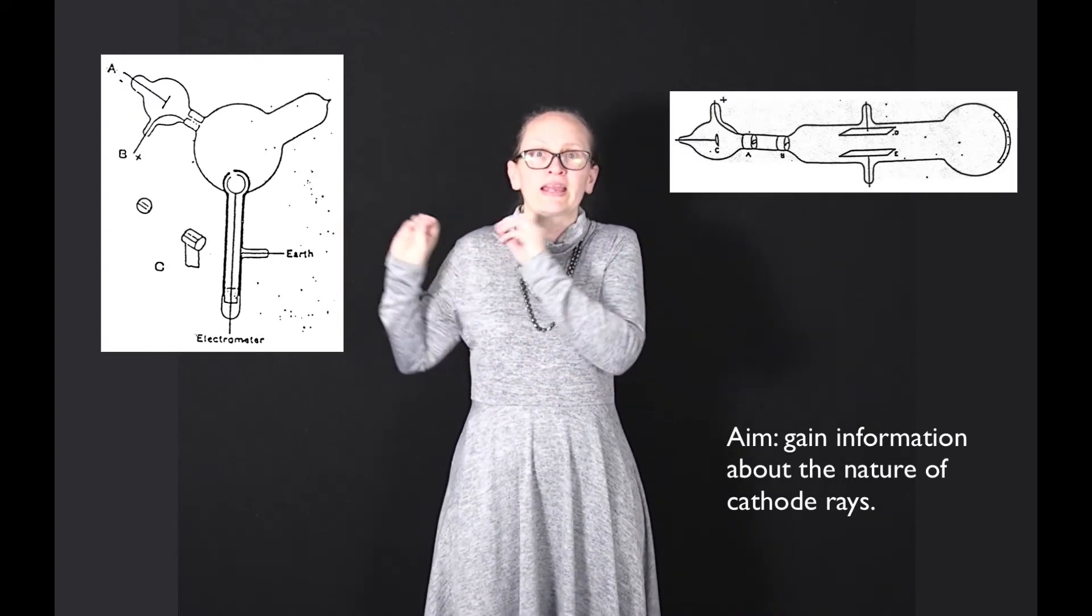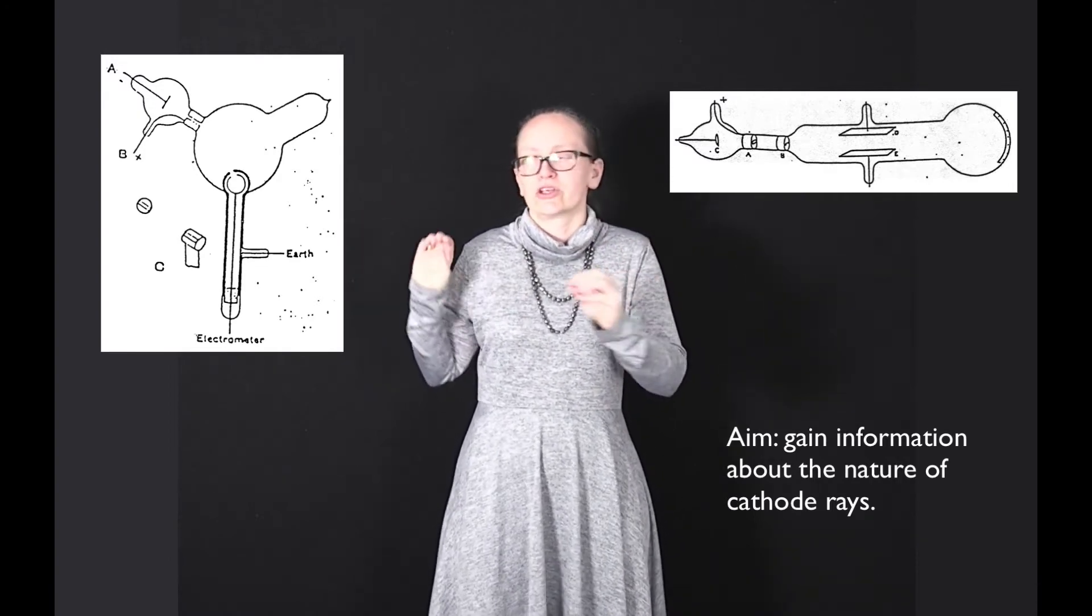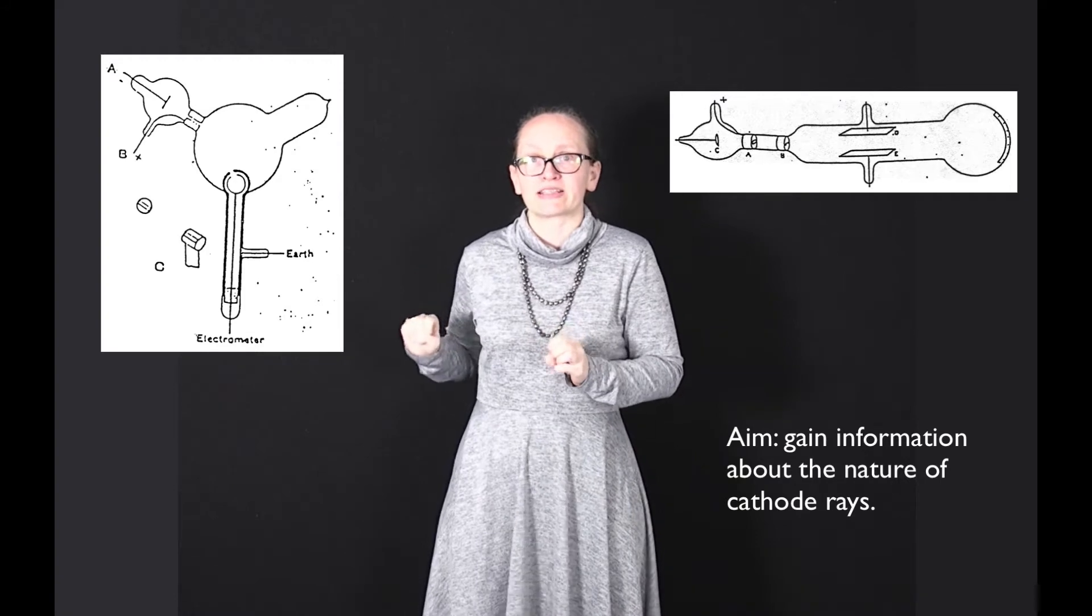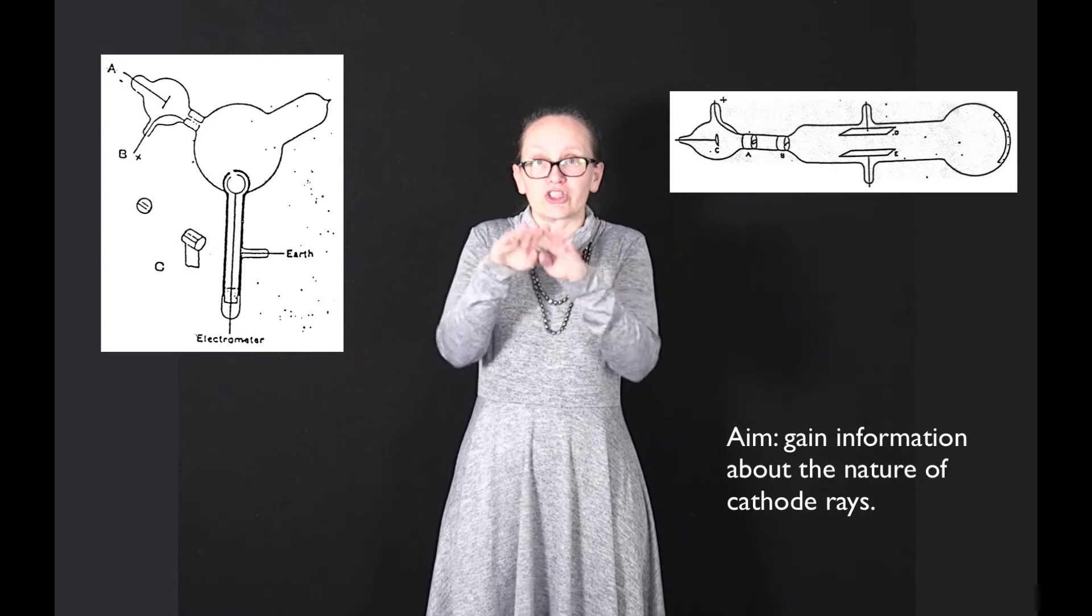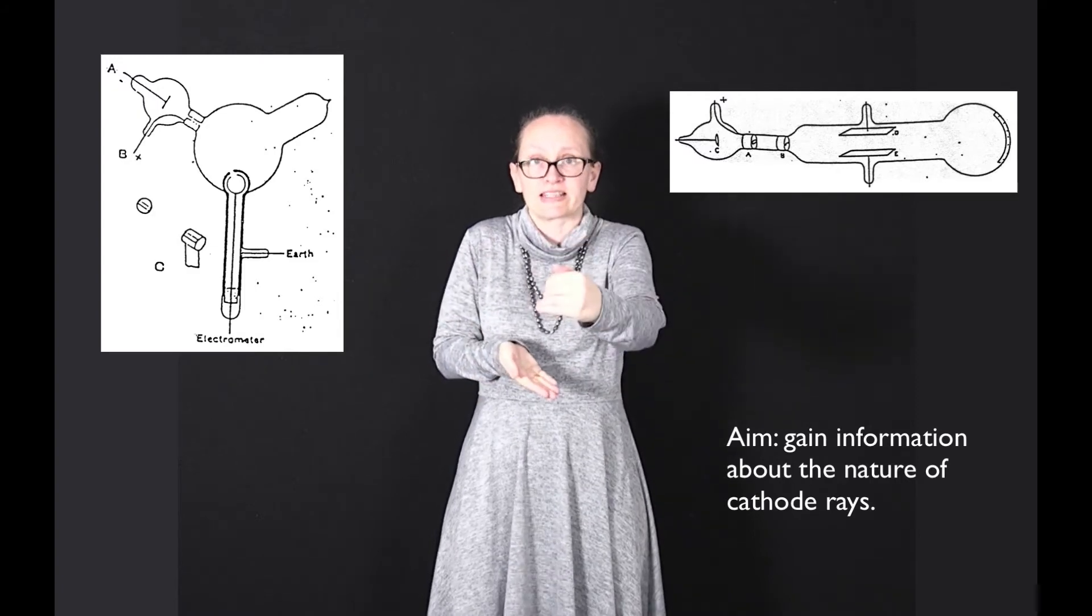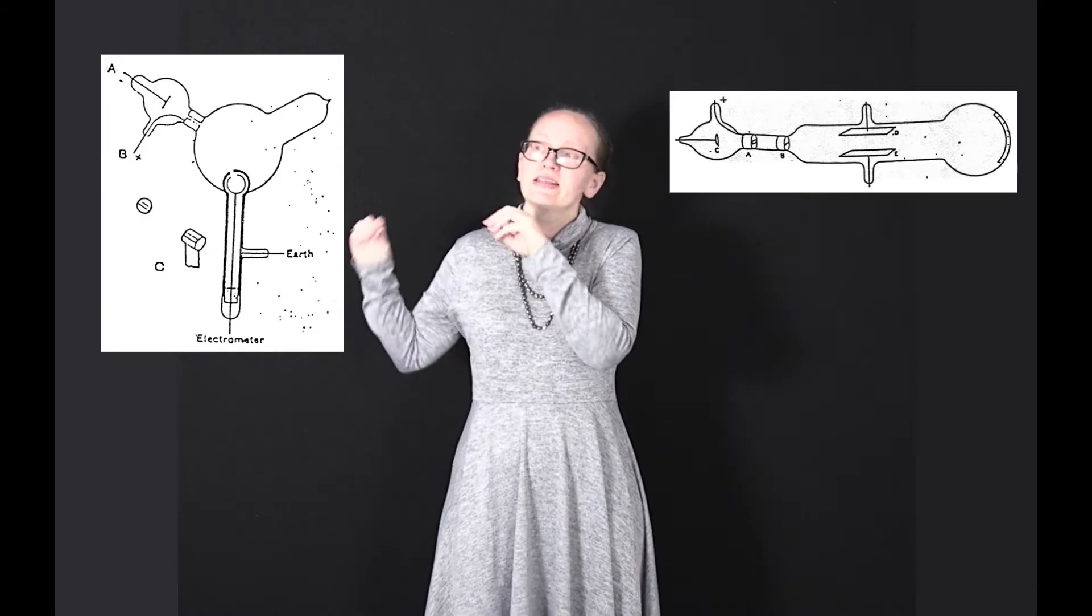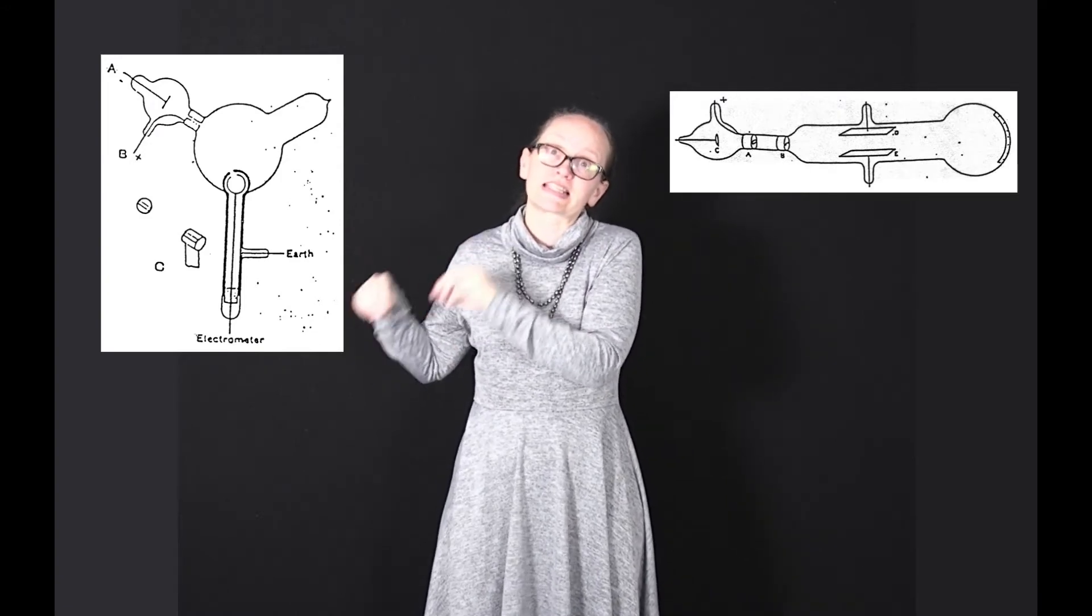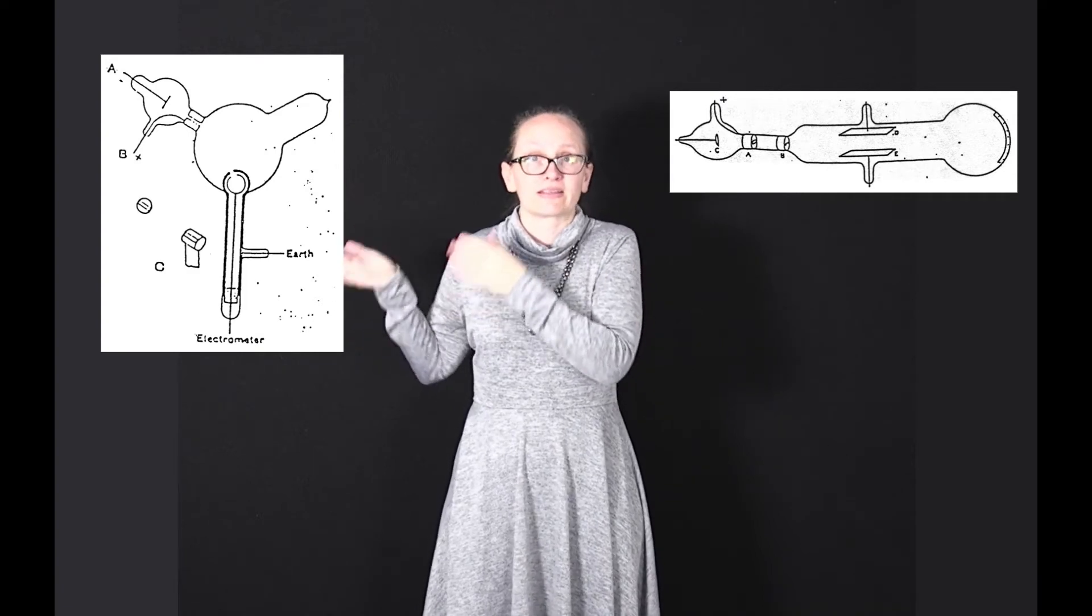They will travel in a straight line if no magnetic field is applied. At the bottom of the apparatus is an electrometer contained within a cylindrical metal sheath with a slit in it. When the cathode rays travel in a straight line, none of them manage to make it through the slit in the sheath, so none are detected.